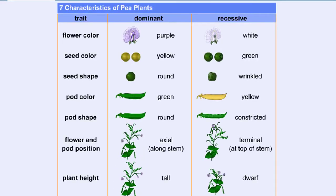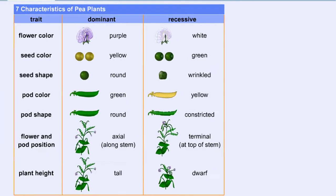Seven characteristics, each with two clearly distinguishable traits, or phenotypes, were studied by Mendel.